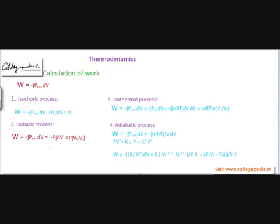Work is force times displacement. In thermodynamics, that formula transitions into another form: W = ∫P dV. The P here is external pressure, because the force applied is from the external source — the piston moves when external force is applied on it, so the pressure in the formula is the external pressure.